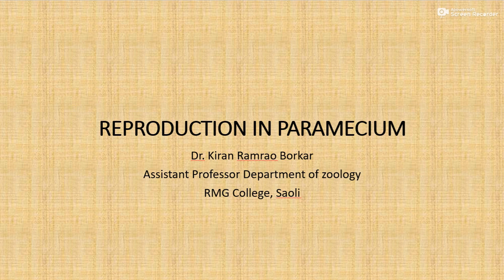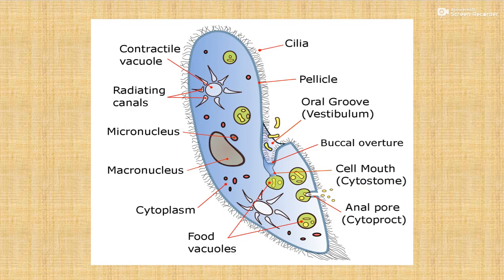Before starting reproduction, I'll explain the structure of Paramecium. This Paramecium, phylum Protozoa, class Ciliophora, is often called slipper animalcules because of its slipper-like shape.